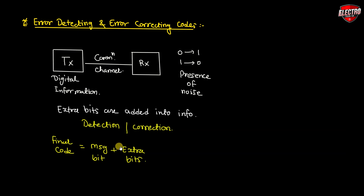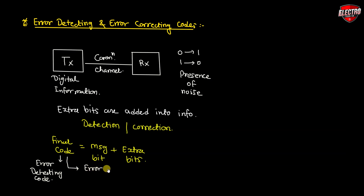Codes which allow only error detection are known as error detecting codes. But codes which allow both error detection and error correction are known as error detecting and correcting codes.